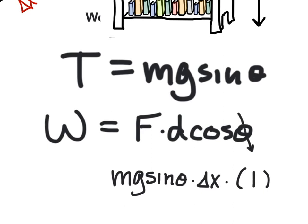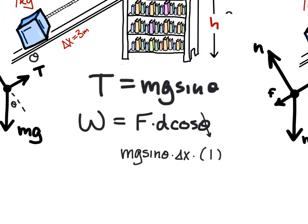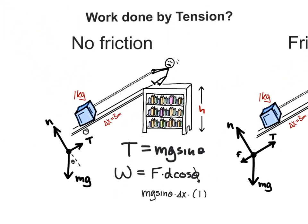So if tension was m g sin theta times displacement of the ramp times the cosine of the angle between the force and the displacement, which is 1. So ultimately the work done in the non-friction example is m g sin theta delta x.